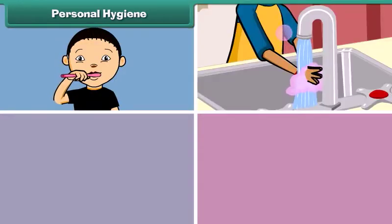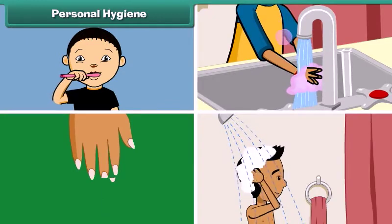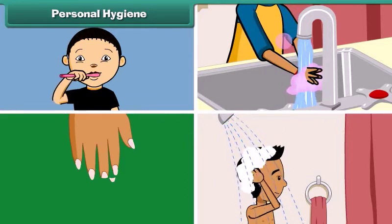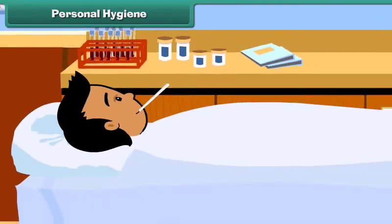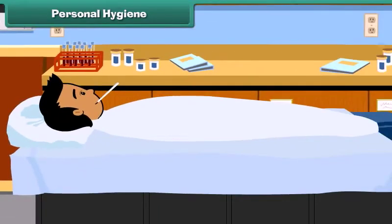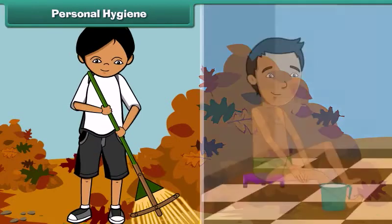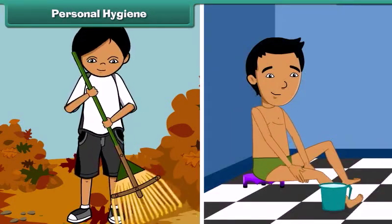Personal hygiene involves keeping one's teeth, hands, nails, hair, body, and clothes clean. But that is not enough — a clean body in a dirty surrounding can still fall ill. So it is important that we keep our surroundings clean as well. Personal hygiene and cleanliness of surroundings go hand-in-hand.